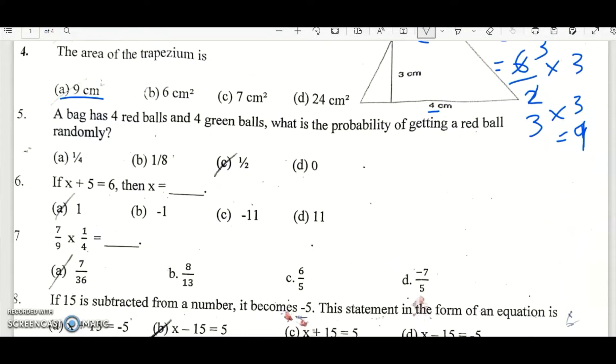Fifth one, a bag has 4 red balls, 4 green balls. What is the probability of getting a red ball randomly? So the probability is 4 red balls out of 4 plus 4 is 8. So that is 1 by 2. The probability of getting a red ball is 1 by 2.